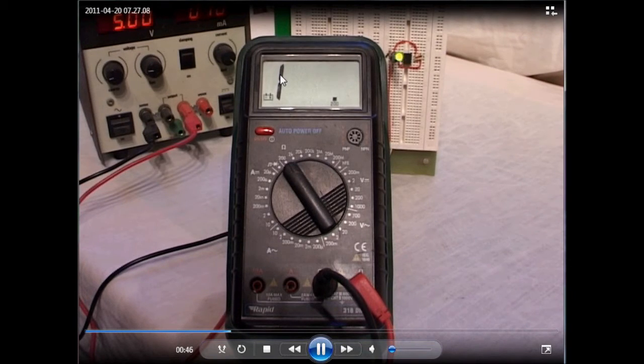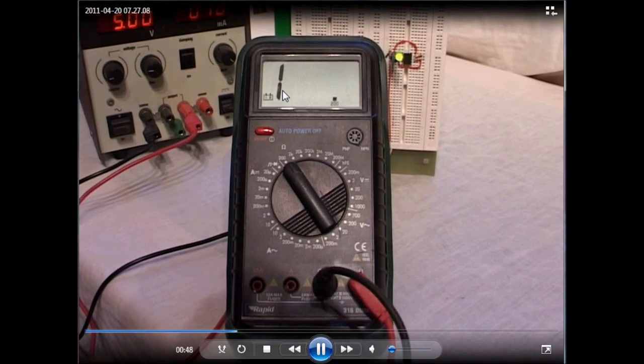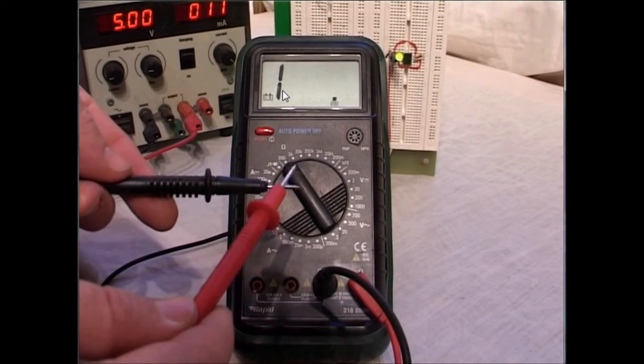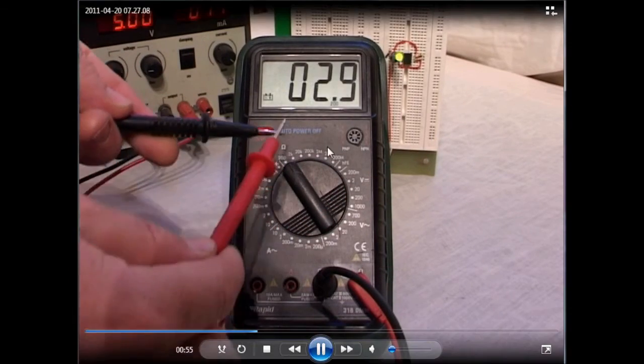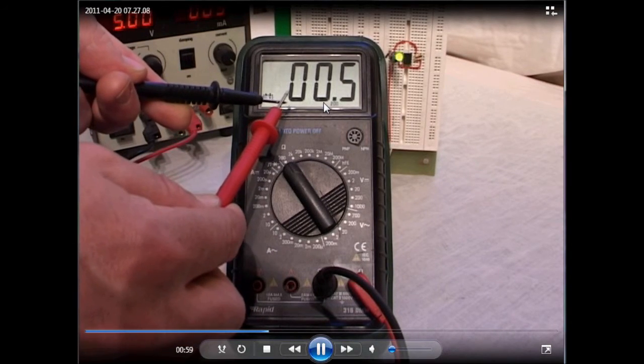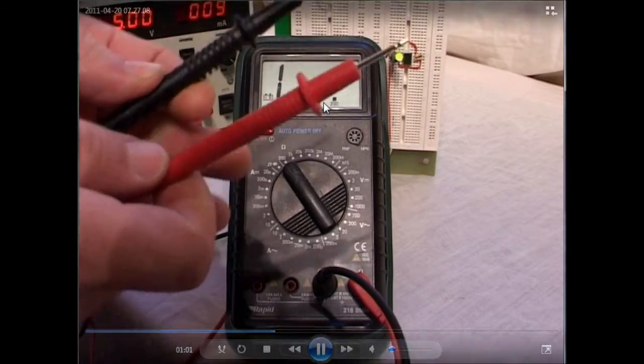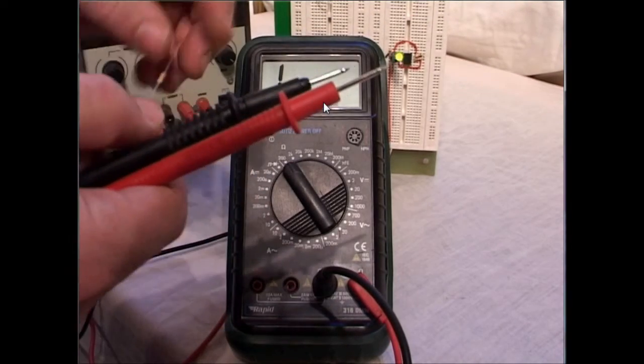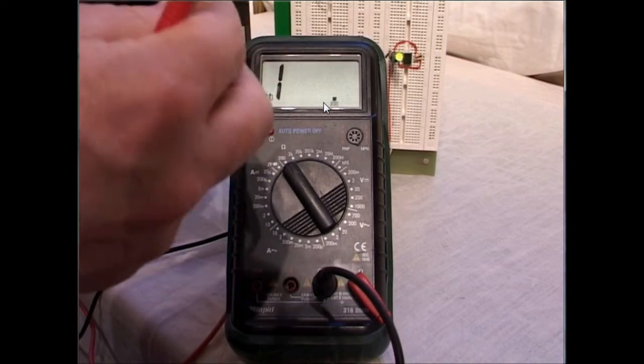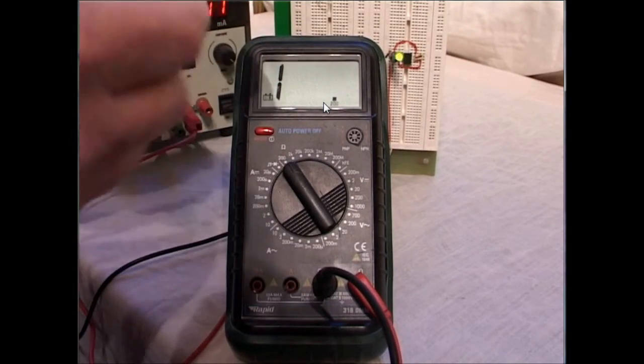When you see a '1' displayed, that means it's out of range and not taking a reading. The first thing I'm going to do is a continuity test where I touch both probes together, and we see a reading of 0.6 ohms. That's the resistance of the probes, which means they're working just fine. Typically, that would be the first check you would do using a multimeter to make sure it's working.